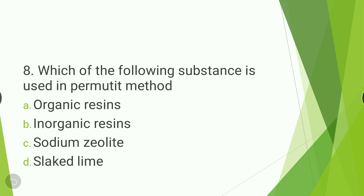Next question: which of the following is used in the permutit process — organic resins, inorganic resins, sodium zeolite, or slaked lime? The answer is sodium zeolite. In the permutit method, sodium zeolite is used to treat water.